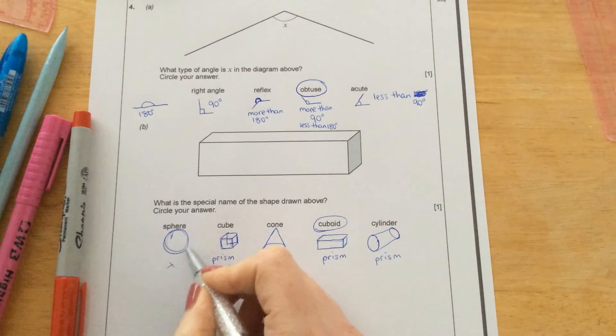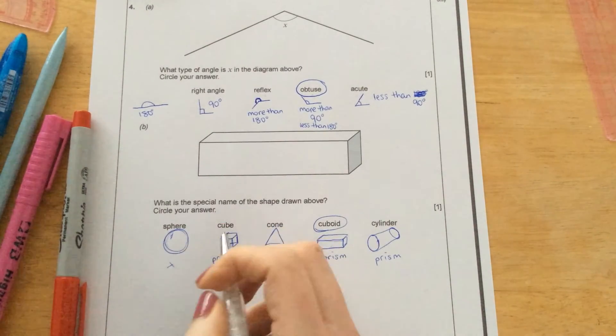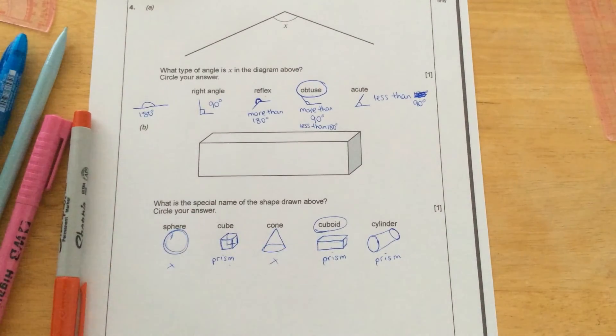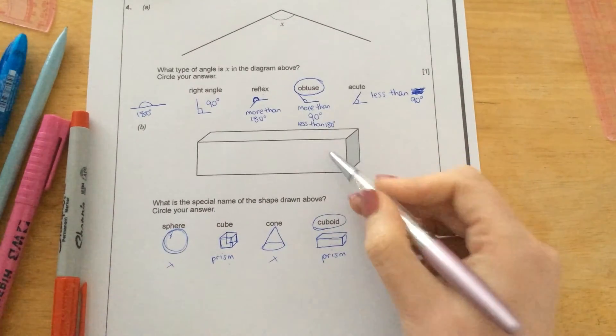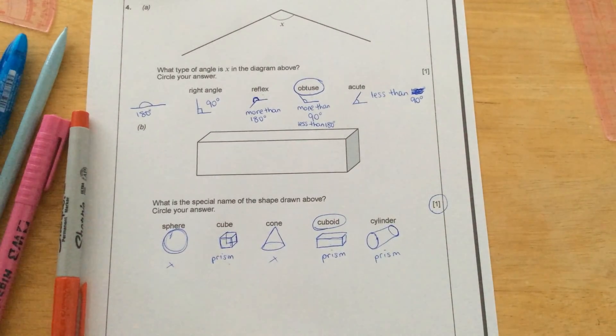So the sphere also is not a prism, because it hasn't spheres like a ball. So it hasn't been stretched out. It doesn't have two end faces. So this shape is a cuboid for one mark.